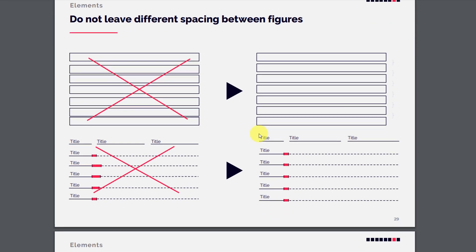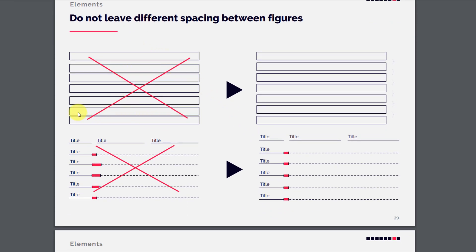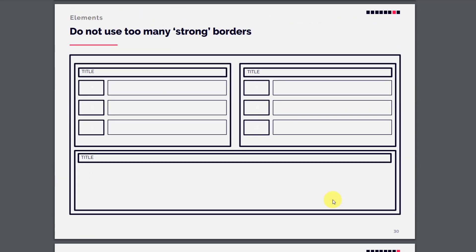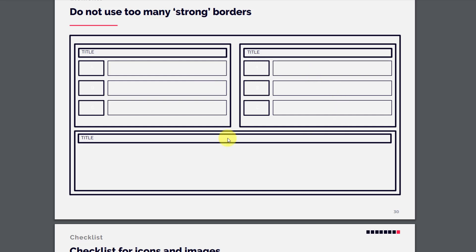Do not leave different spacing between figures. The boxes or rectangles should not be spaced inconsistently — more space in some places and very little in others. It should be justified so that vertical spacing is equal. Similarly, from the title to the text below, the gap should be exactly the same on all rows — that is the ideal way of designing.